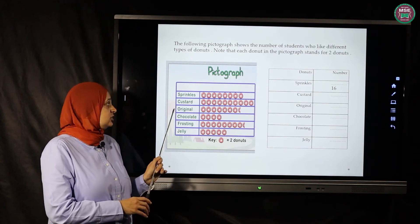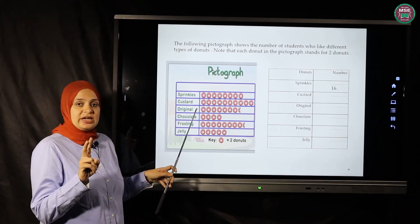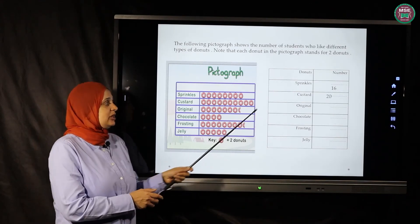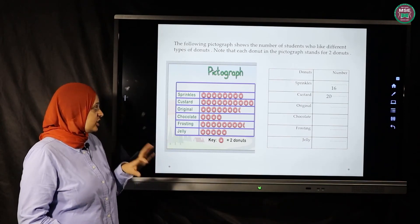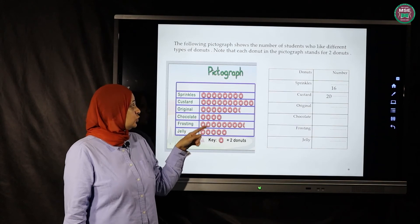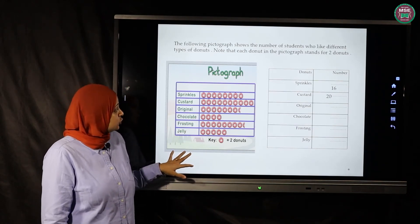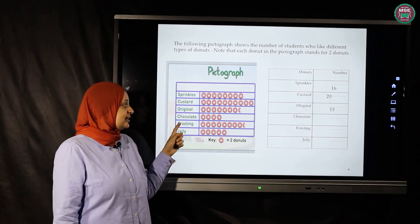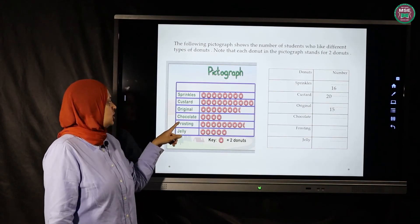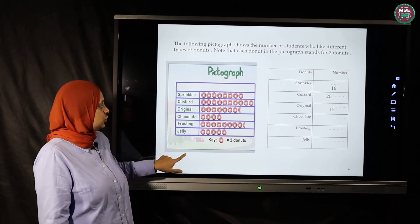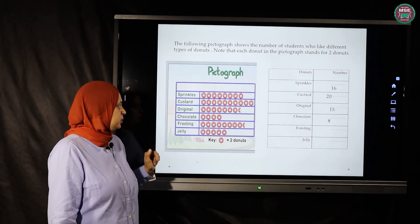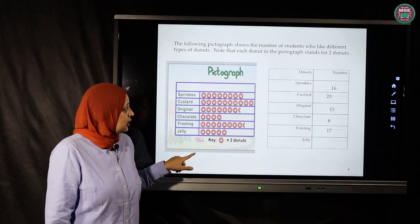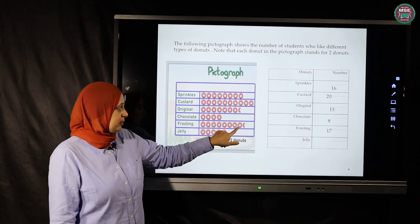For custard, counting by two: two, four, six, eight, ten, twelve, fourteen, sixteen, eighteen, twenty — custard has twenty donuts. For original flavor: two, four, six, eight, ten, twelve, fourteen — then a half donut counts as one, so the total is fifteen. For chocolate: two, four, six, eight — chocolate has eight donuts. For frosting: two, four, six, eight, ten, twelve, fourteen — then a half donut makes seventeen.